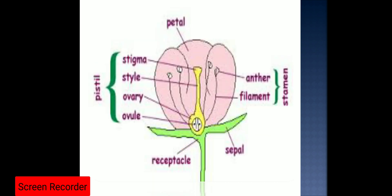Here is the diagrammatic sketch of the flower. This part is the stalk, by which you hold the flower, or you can say the stalk is attaching the flower with the stem or the branch. Then the stalk gets expanded in the form of a cup-shaped structure holding all the whorls of the flower, which is known as the receptacle. The receptacle is also known as the thalamus or torus.